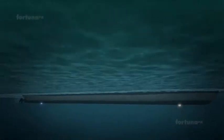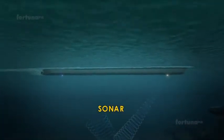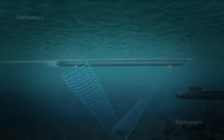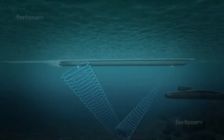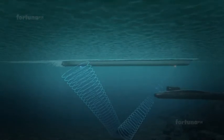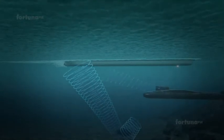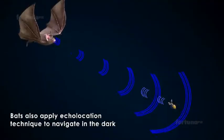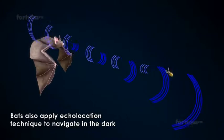The principle of an echo is used in sonar, sound navigation and ranging, a device used for locating submerged objects and submarine communication by means of sound waves. Bats also apply echolocation technique to navigate in the dark.